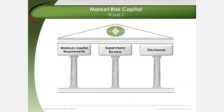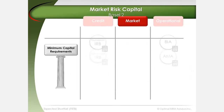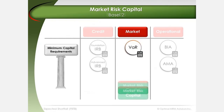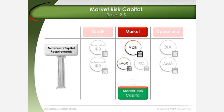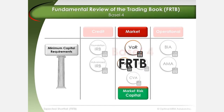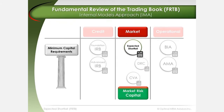Before the financial crisis in 2008, minimum capital associated with trading risk exposure under Basel II was set based on a value at risk measure. Under Basel 2.5, stressed VAR and other metrics were introduced in an attempt to bridge the gap in capital setting until Basel's Fundamental Review of the Trading Book was completed. In the internal models approach under the revised standards, expected shortfall replaces value at risk and stressed value at risk.